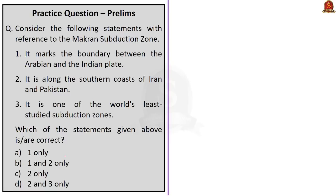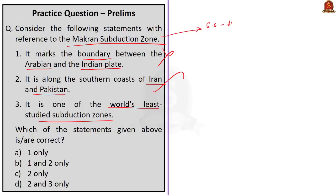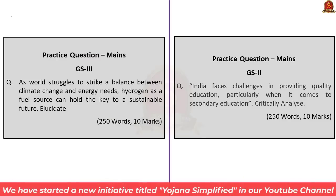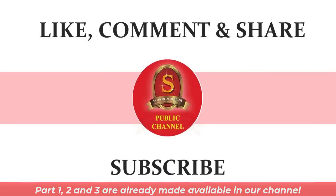Practice question on the Makran subduction zone: Statement 1 says it marks the boundary between the Arabian and Indian plate — incorrect. Statement 2 says it is along the southern coasts of Iran and Pakistan — correct. The Makran subduction zone is located in the southeast of Iran and southeastern Pakistan, extending for almost 900 km along the Eurasian-Arabian plate boundary. Statement 3 says it is one of the world's least studied subduction zones — correct. So the right answer is option D — 2 and 3 only. The list of mains questions is displayed below; you can write your answers and post them in the comment section. With this, we have come to the end of today's Hindu News Analysis.